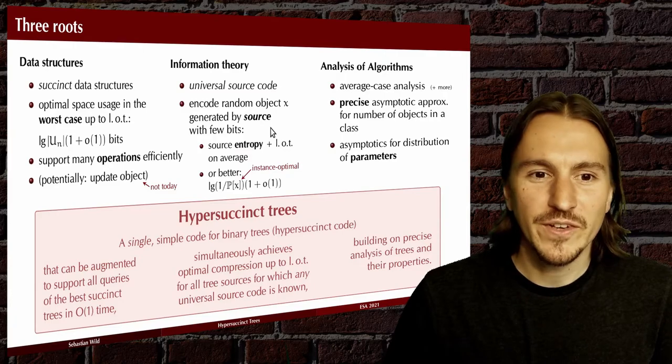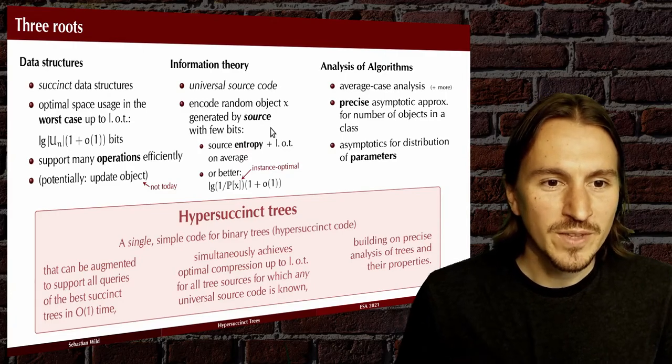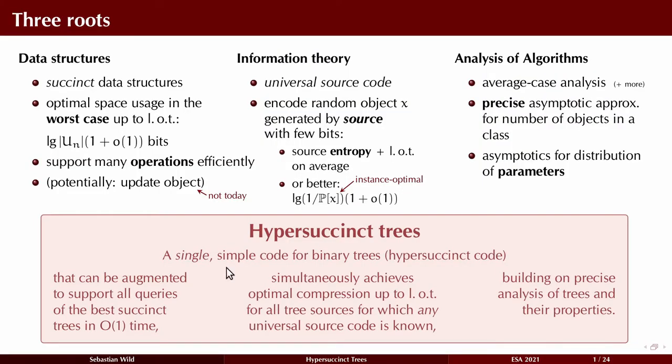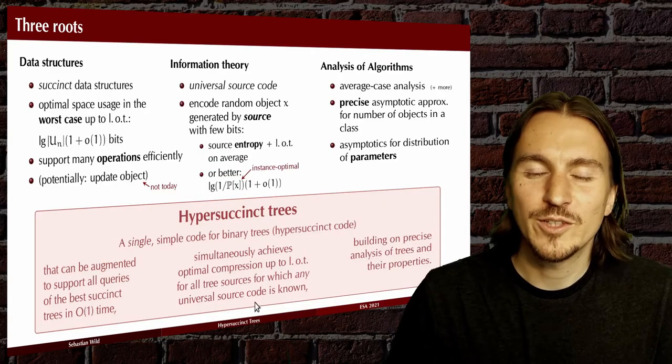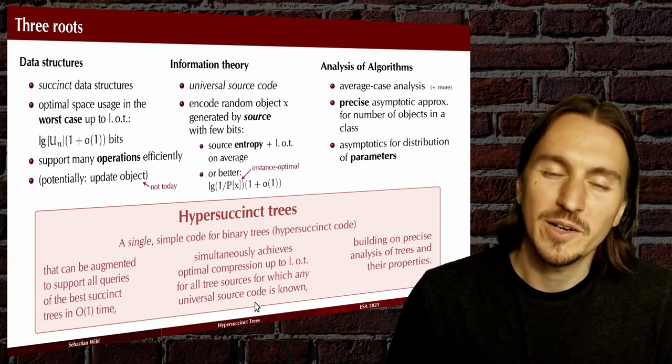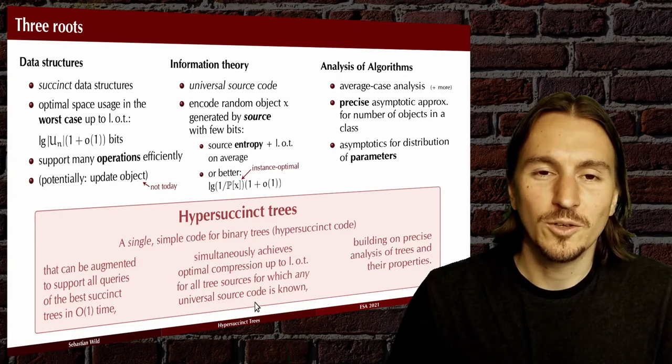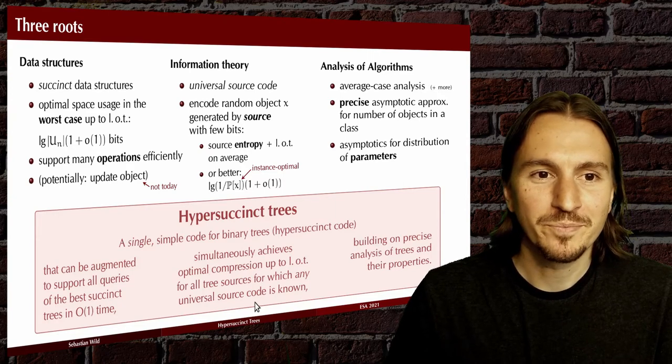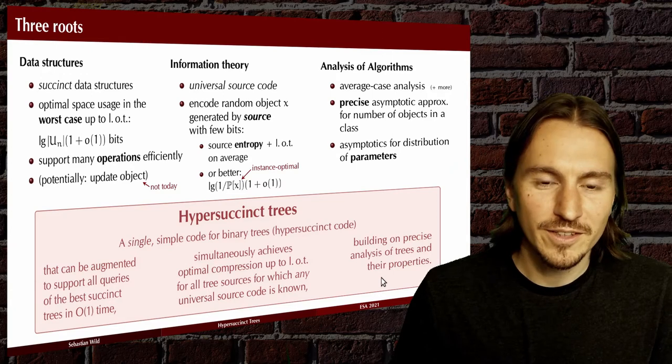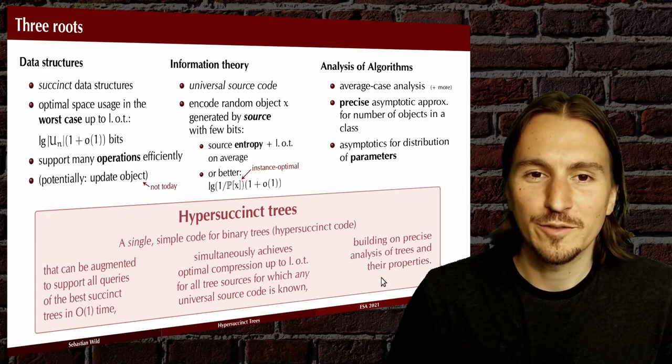We bring this together by presenting hyper succinct trees. This is a single simple code for binary trees, a compression method for binary trees, that on the one side can be augmented to support all sorts of operations on trees efficiently in constant time on a word ram, while at the same time achieves the best space bound that we know for any universal source code on a whole list of binary tree sources. And we built in our analysis on the tools from the AOFA community.